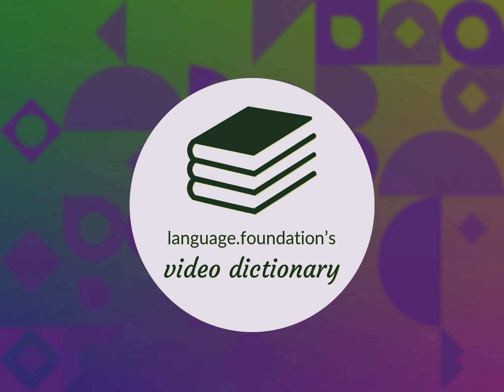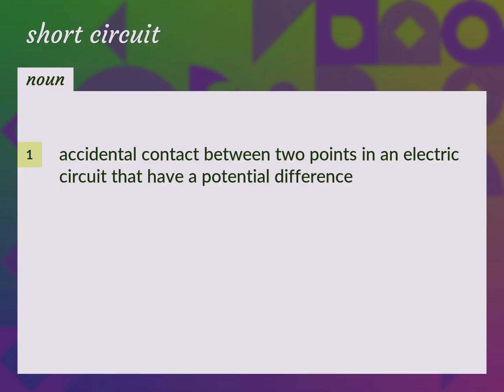Language Foundation's Video Dictionary, helping you achieve understanding. Accidental contact between two points in an electric circuit that have a potential difference. Short.